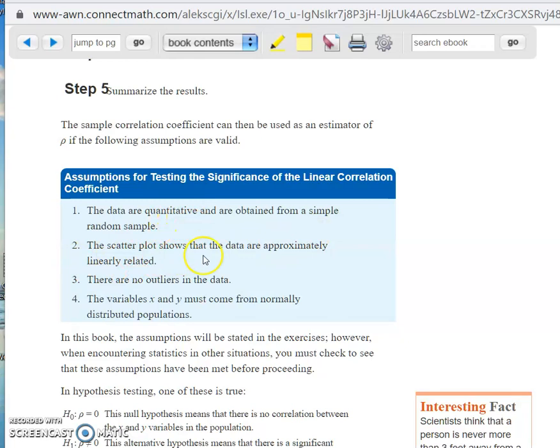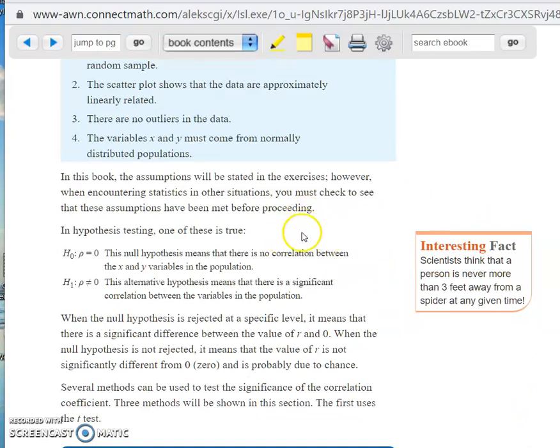The scatterplot, when you do the scatterplot, it has to show that it's more or less approximately linearly related. It can't be any outliers. If there's any outliers, if you have data points that are just totally outside of the others, that's called an outlier. What really happens is people just toss those out. They'll just say, well, that was a bad measurement. And then X and Y must come from normally distributed populations. So this only works in this particular type of hypothesis test if the X and the Y are both more or less normally distributed.